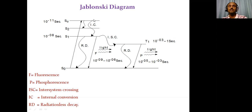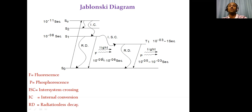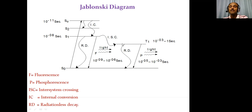When an electron from different singlet excited states comes to its adjacent lower energy state, that is called internal conversion, denoted by IC. When the electron from S1 comes to the ground state, that is called fluorescence. Sometimes the singlet excited state is converted into the triplet excited state by a change in the spin of the electron — that is called ISC or inter-system crossing. From the triplet excited state, the electron comes to the ground state via emission of radiation, which is called phosphorescence.